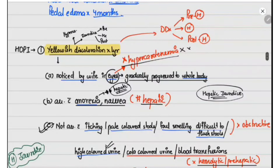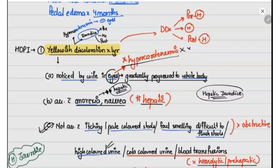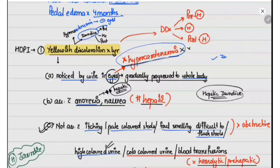As the patient has yellowish discoloration, it can be present either due to hypercarotinemia or due to jaundice. Hypercarotinemia is absent in the eyes, whereas jaundice initially appears in the eyes. Since there is history that the initial discoloration was noticed in the eyes followed by the whole body, it suggests this is probably not a case of hypercarotinemia but rather a case of jaundice.